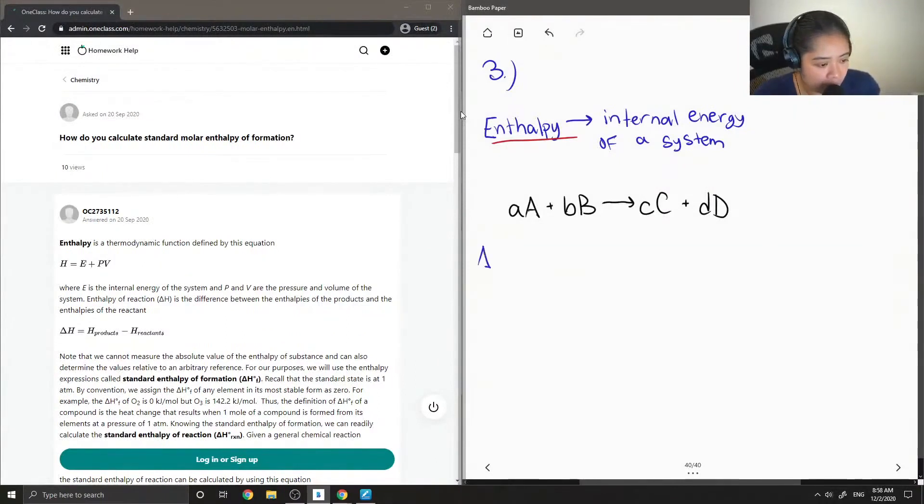If I wanted to find the delta H of the reaction, this would be equal to the sum of the delta H of formation for the products minus the sum of the delta H of formation of the reactants.